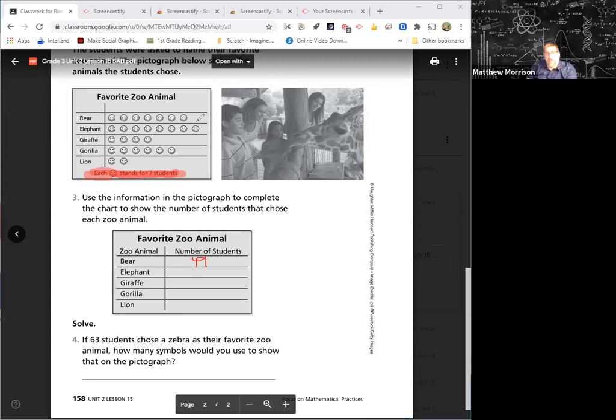How many elephants are there? Eight, right? So seven times eight is 56. Okay, go ahead and finish this chart here. And you can do number four on your own. 63 students choose the zebras for favorite zoo animal. How many symbols would you use to show that? You're going to draw the smiley faces down here to show that, and I know that you guys can do that. I'm not going to do that for you.